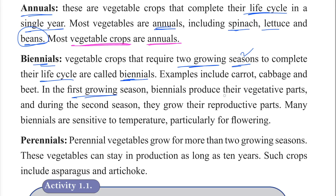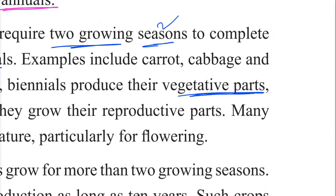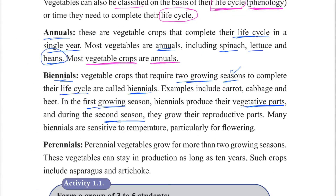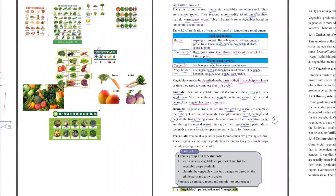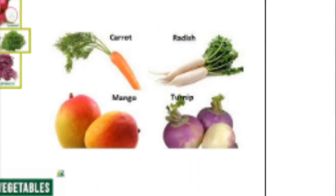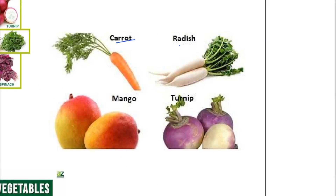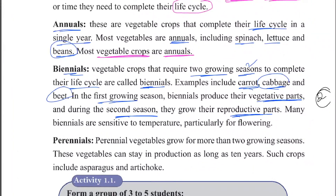Biennials produce vegetative parts in the first year and reproductive parts such as fruit and seeds in the second year. Examples of biennials include carrot and radish.